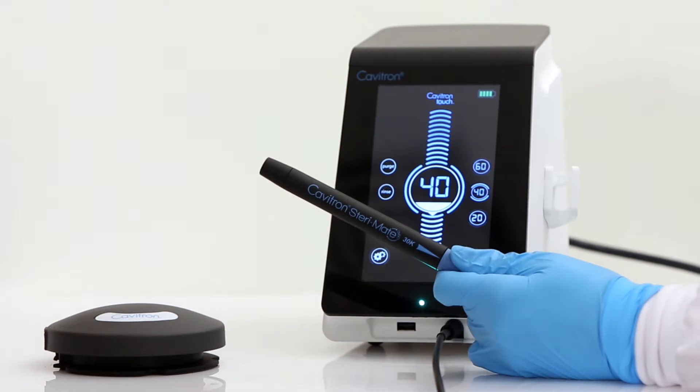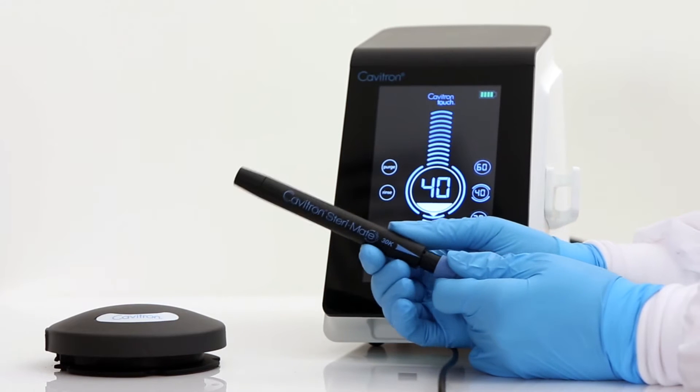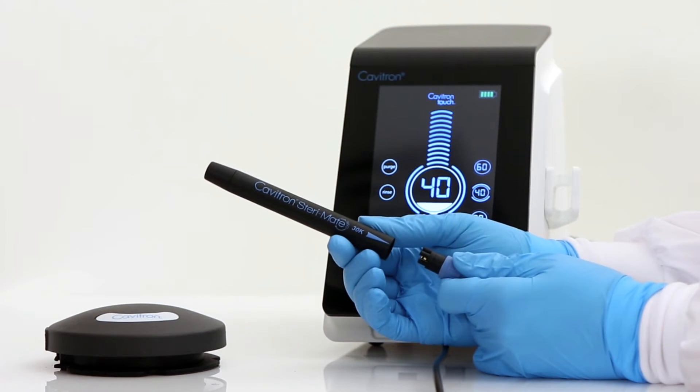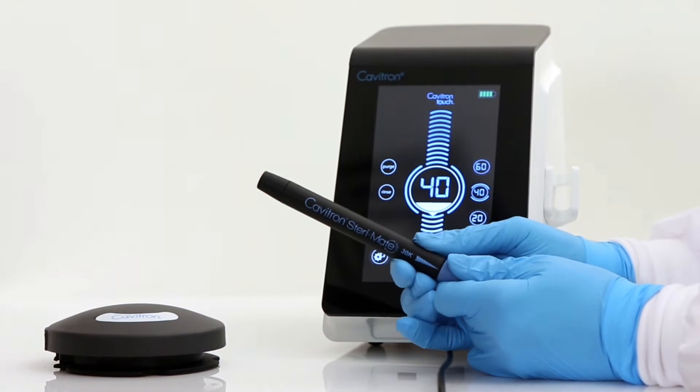If the cable assembly does not seat into the handpiece, gently rotate the handpiece until the contacts align and then fully insert the handpiece.